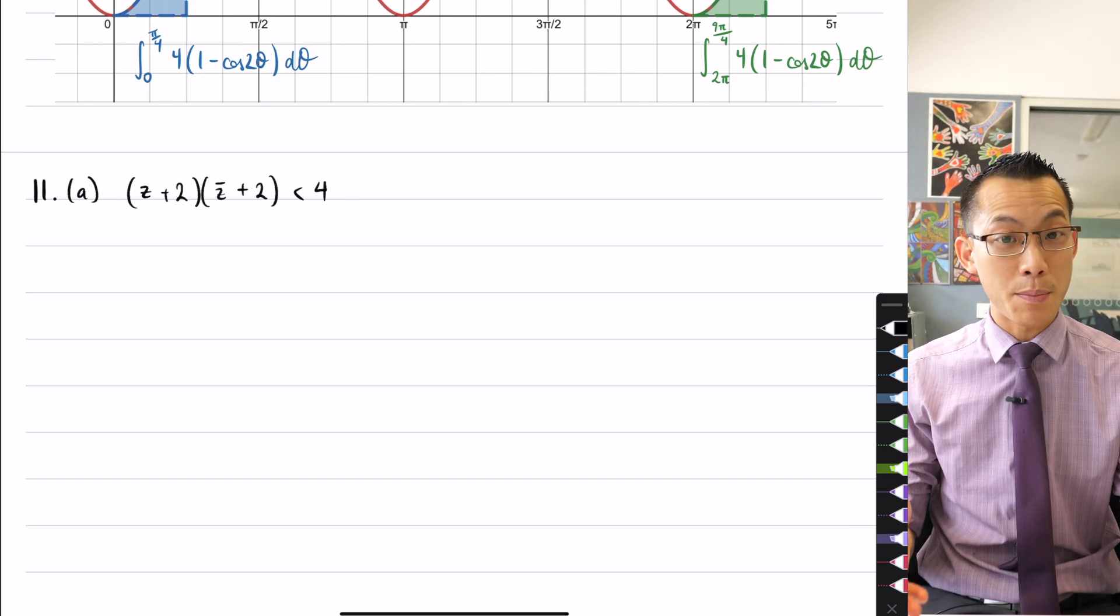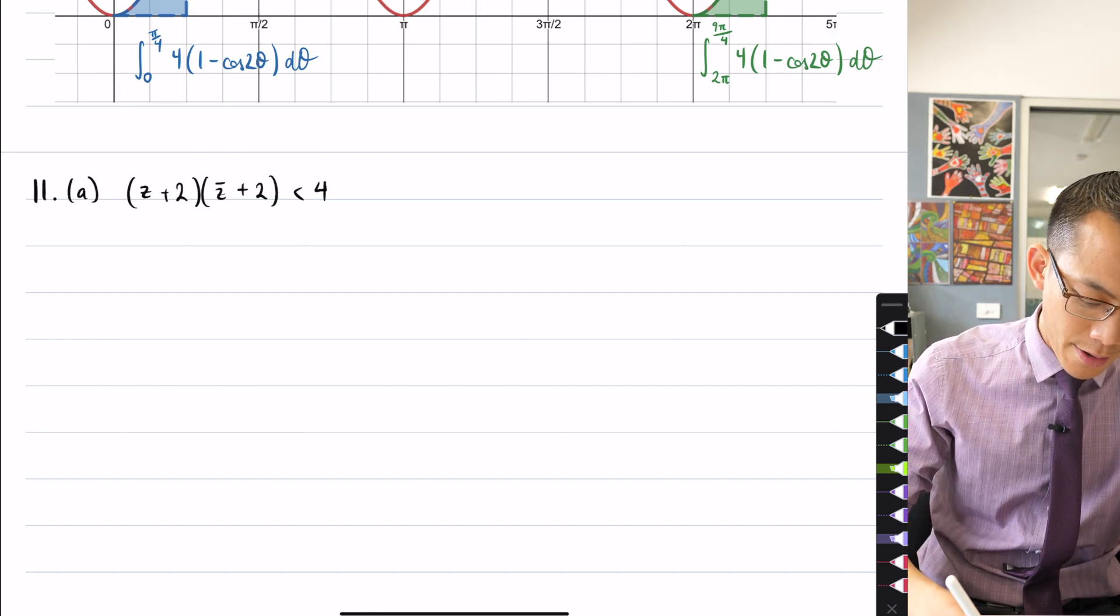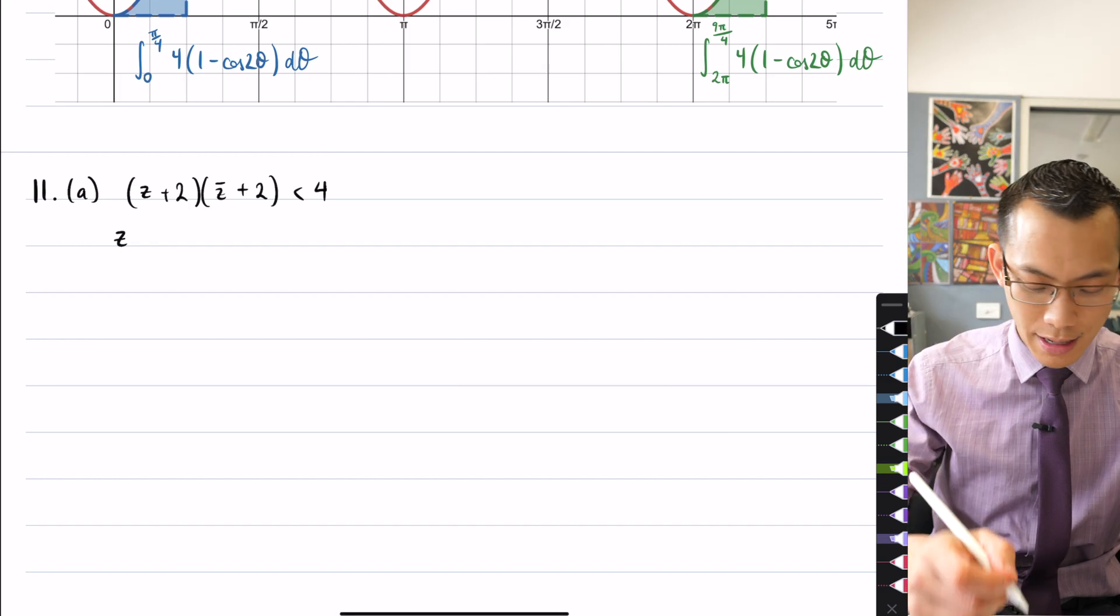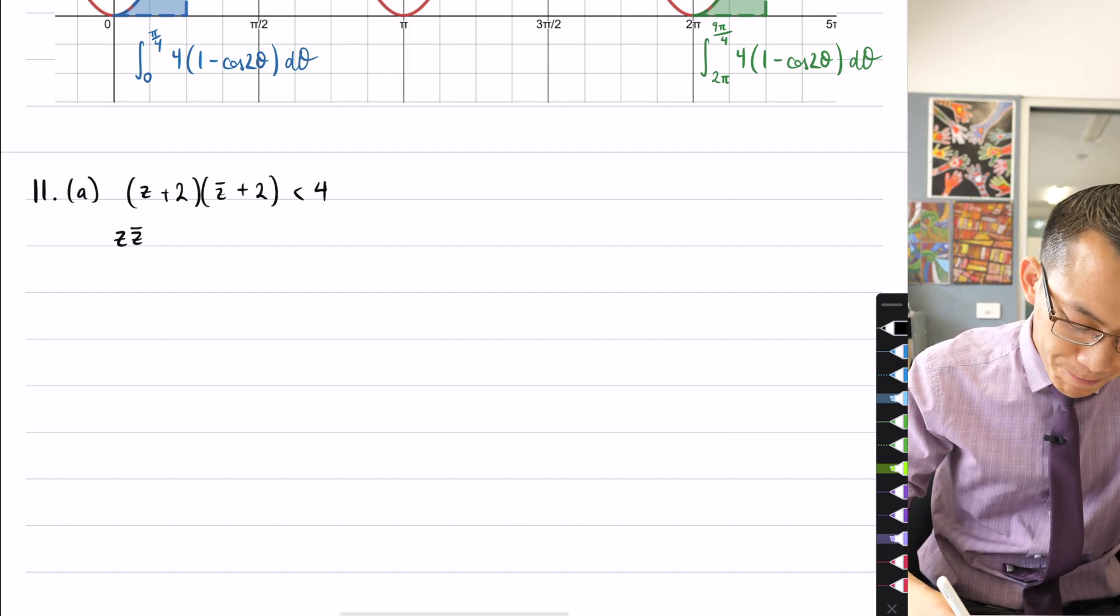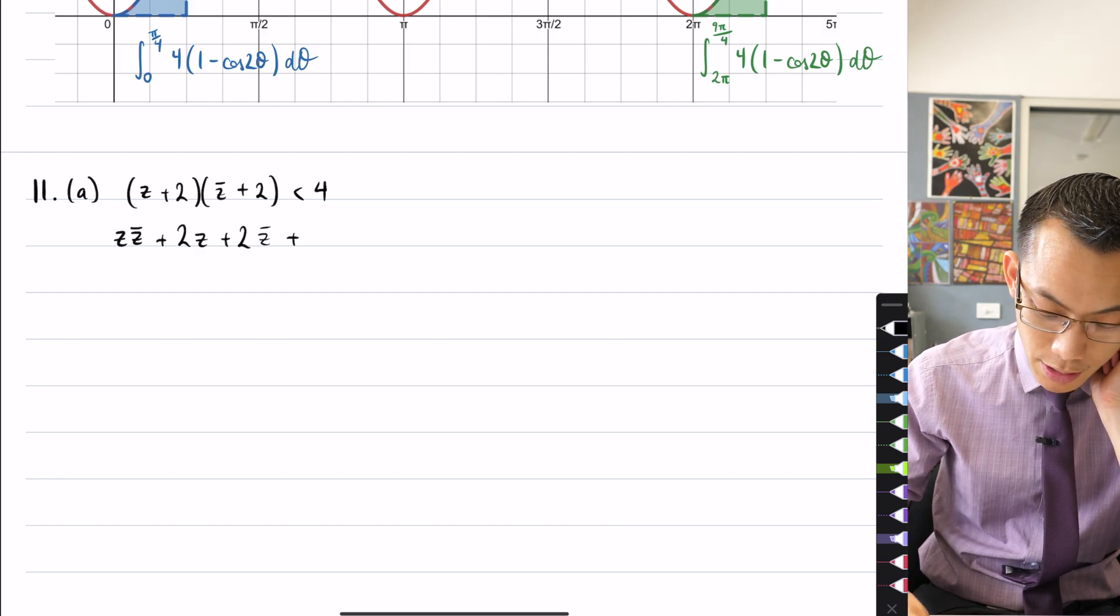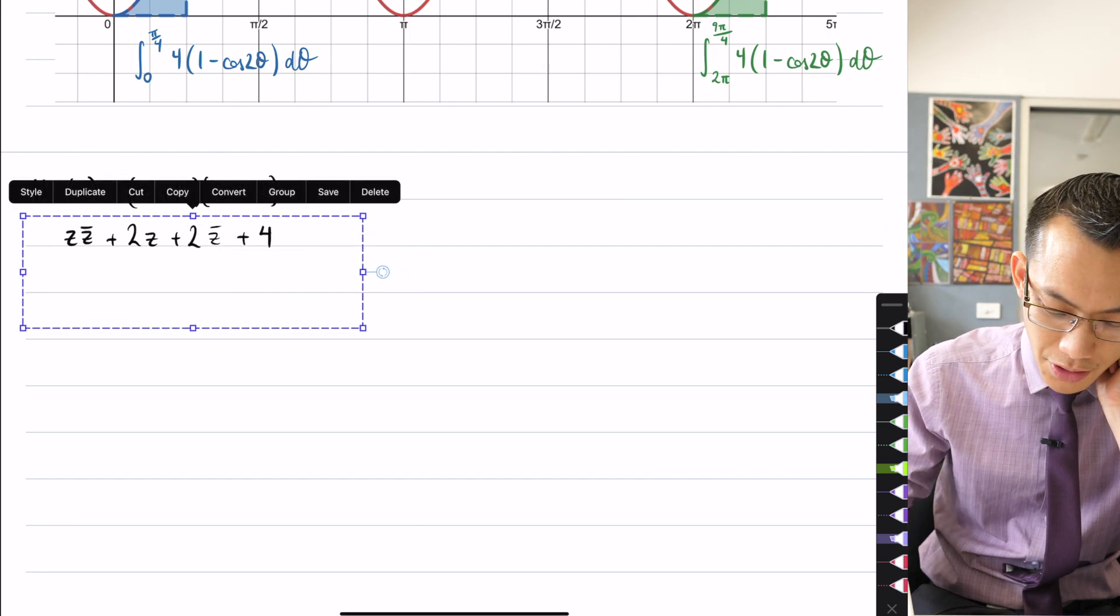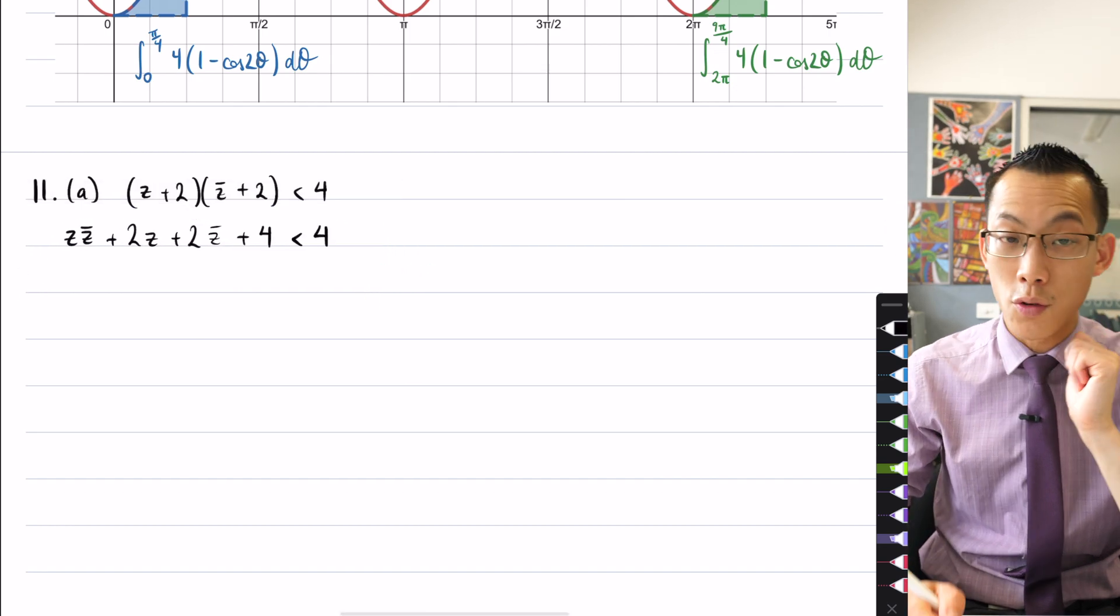So let's have a go. What I'm going to do is I'm just going to expand what I have here and see what emerges. So I'm going to have, just doing, you know, first, outside, inside, last, Z, Z bar. I'm going to get two lots of Z, I'm going to get two lots of Z bar, and then 2 times 2 gives me 4. And then I'll move that over a little bit so that I can have my less than 4 over on the right-hand side.